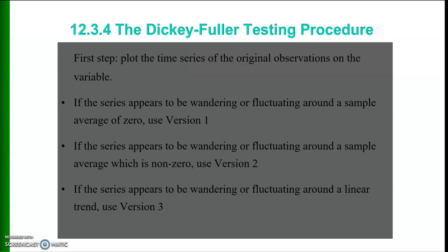If the series appears to be wandering or fluctuating around a sample average of zero, we use version 1 with no constant and no trend. If the series appears to be wandering or fluctuating around a non-zero sample average, we use version 2 with a constant but no trend. If the series appears to be wandering or fluctuating around a linear trend, we use version 3, which includes both constant and trend.